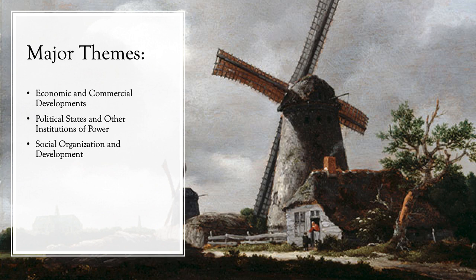We're doing a comprehensive overview on a single nation — the Netherlands in the 17th century — hitting all the basic themes: economic, political, and social. We'll wait and discuss Dutch art in another lecture when we go over Northern Baroque art.